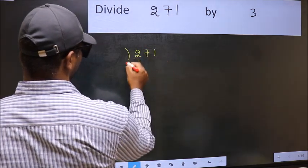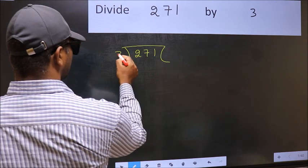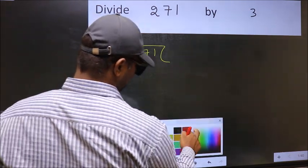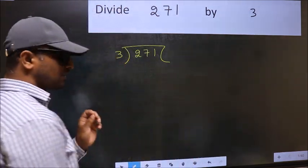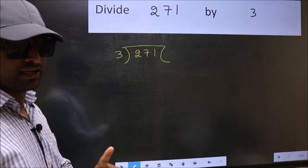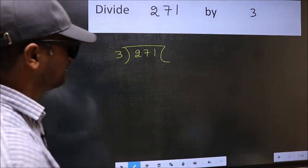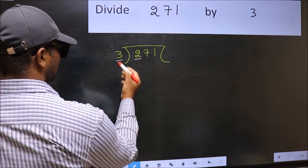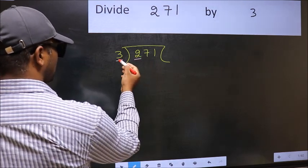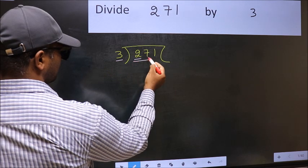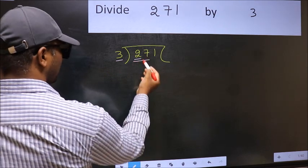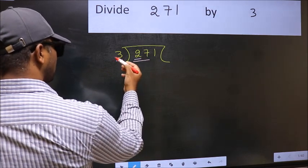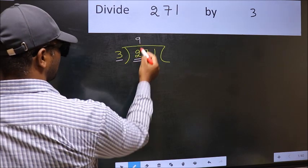271 and 3 here. This is step 1. Next, here we have 2 and here 3. 2 is smaller than 3, so we should take two numbers: 27. When do we get 27 in the 3 table? 3 nines is 27.